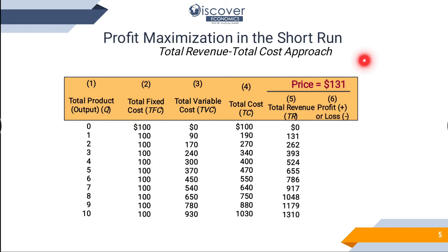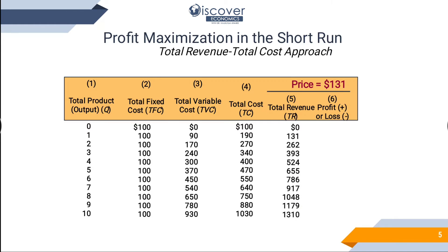You have to know that the price is fixed. Now, total revenue formula — price into quantity — which we had seen in the last slide. You have to write it out.